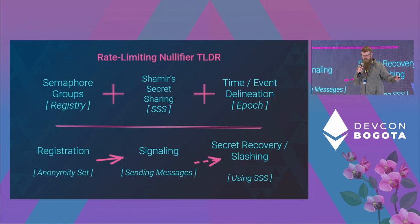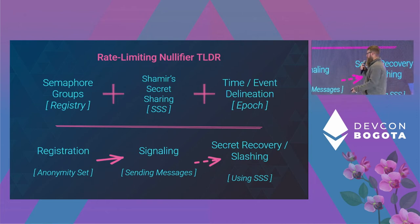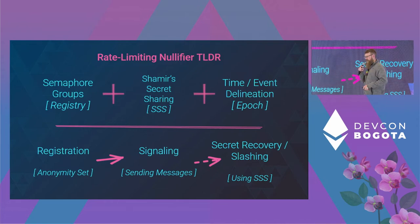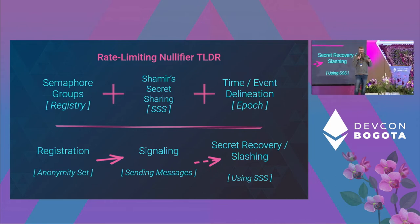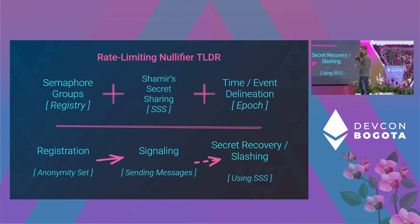It is made up of a couple of things: a semaphore, which is the talk before this — basically just proving you're part of an anonymity set without revealing who you are — Shamir's secret sharing scheme, which is the majority of this talk, and some time or event delineation, which I'll get into in a minute.